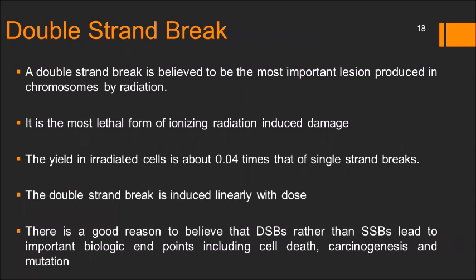The double strand break is believed to be the most important lesion produced in chromosomes by radiation — it is the most lethal form of ionizing radiation induced damage. The yield in an irradiated cell is about 0.04 times that of single strand breaks. So if there are 1000 single strand breaks, there will be only 40 double strand breaks. The double strand break is induced linearly with dose. There is good reason to believe that double strand breaks, rather than single strand breaks, lead to important biological endpoints including cell death, carcinogenesis and mutation.